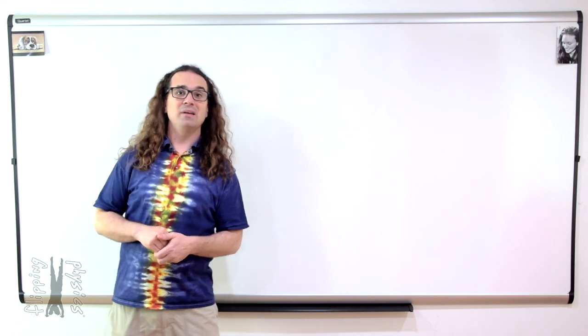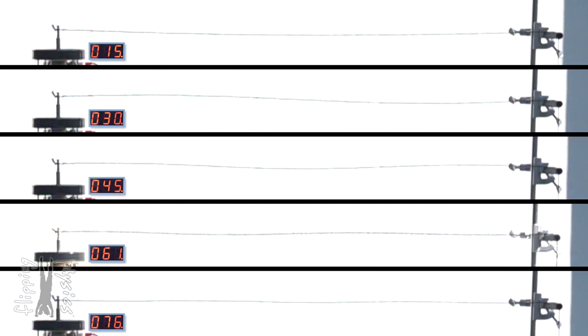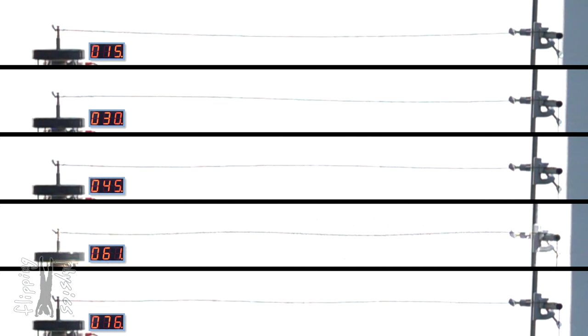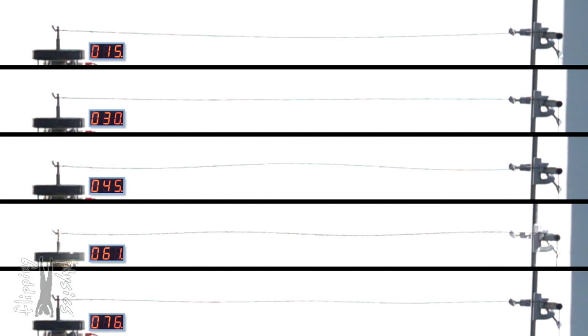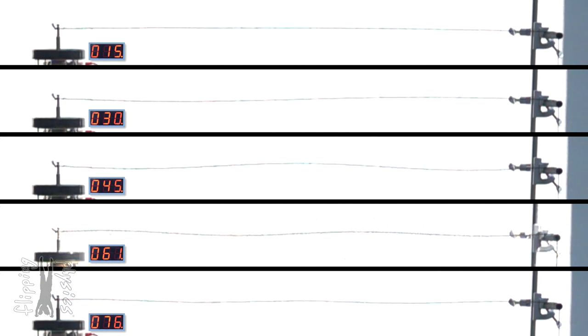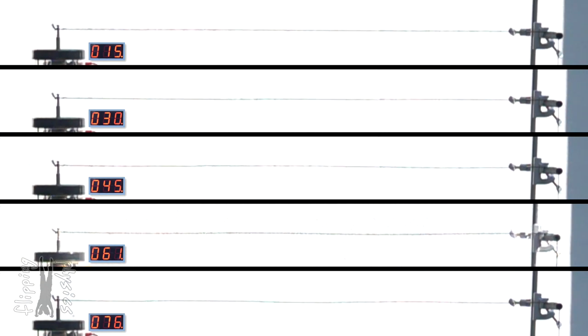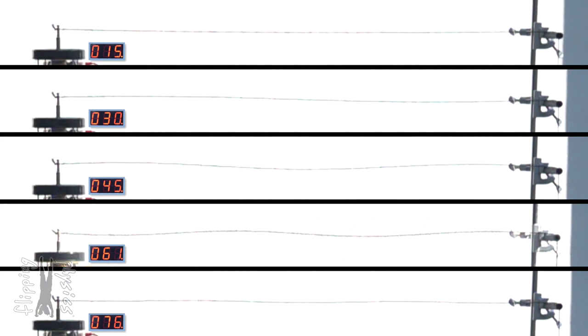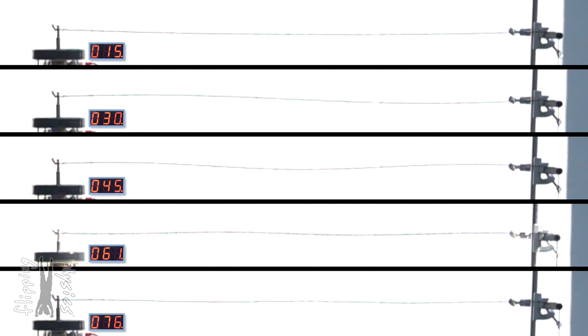Good morning. Today we are going to build on what we learned last time about standing wave patterns. As we demonstrated before, standing wave patterns can only be created at specific wavelengths and therefore specific frequencies. This demonstrates five different frequencies at which standing wave patterns can be created on this string.